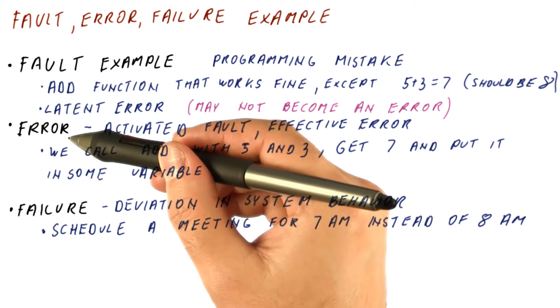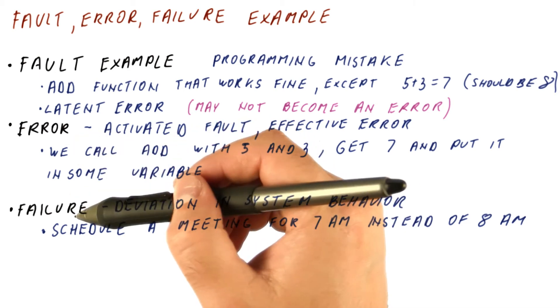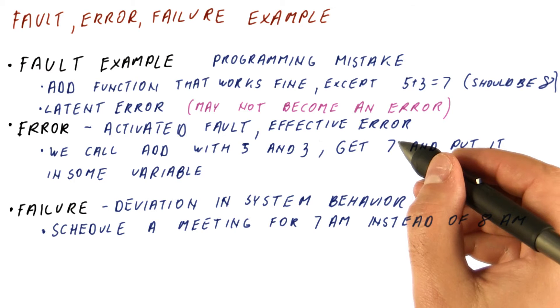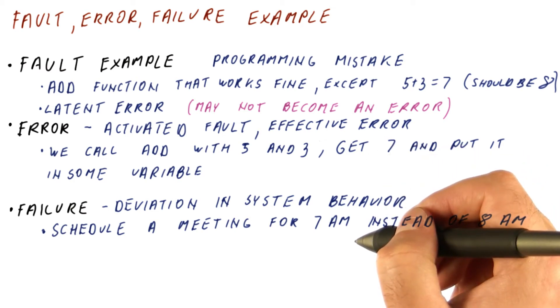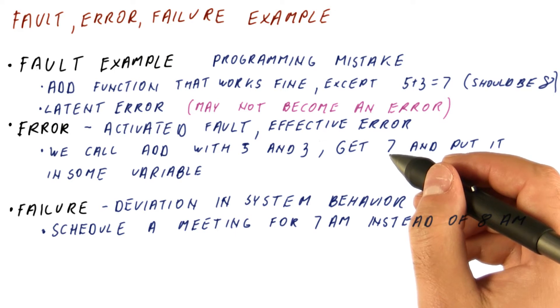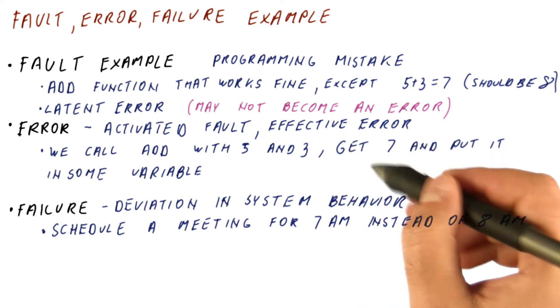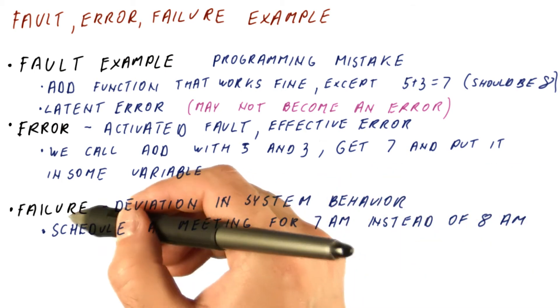Similarly, we can have an error and never get a failure. For example, here, if this value 7 was never used, and programs often do this, then we have an error, a variable has the wrong value, but we don't get a failure as a result.